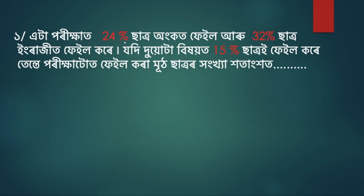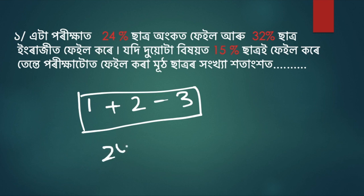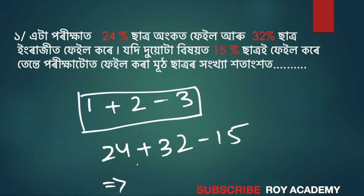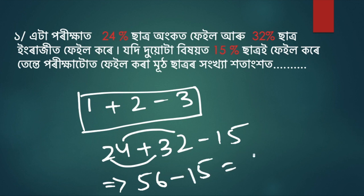Now, we will have 24% failure. Now, 32% failure. If you fail 2, you will have 15% failure. If you fail 3, you will have failure of failure. So I will add 1 plus 2 minus 3. If you fail 7, you will have 24% failure, 32%, and number 2 is 15% minus. So we have minus here. We have passed minus 15 and the answer is 41.